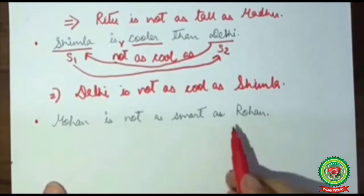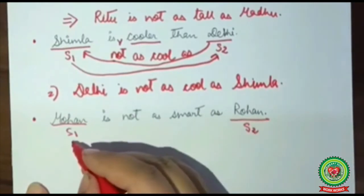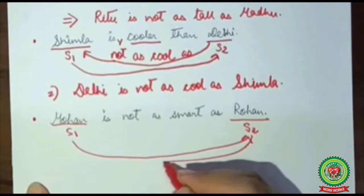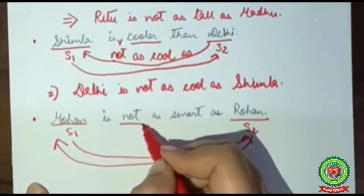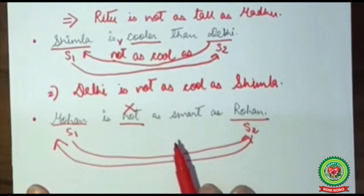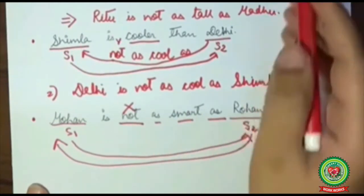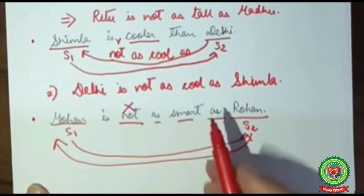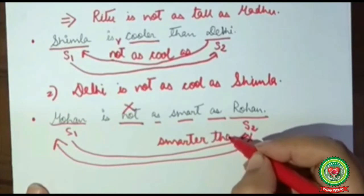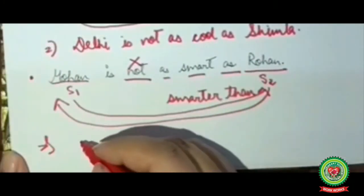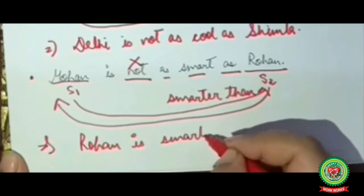Next example: 'Mohan is not as smart as Rohan.' Mohan is subject one, Rohan is subject two, so they swap. 'Rohan is not as smart as...' — it is a negative sentence, so we remove 'not' to make it positive. 'As smart as' tells us it is positive degree, so we change it into comparative: 'smart' becomes 'smarter', and the bodyguard used with comparative degree is 'than'. So the answer would be: 'Rohan is smarter than Mohan.'